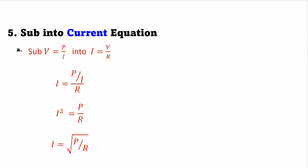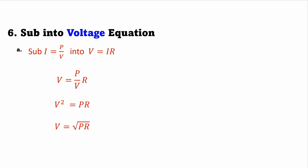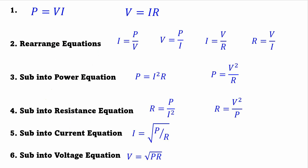I can substitute into the current equation. Putting voltage equals power over current into current equals voltage over resistance gives current equals power over current over resistance. Bringing the current to the left-hand side, I get I squared equals P over R, and taking the square root of both sides gives current equals the square root of power over resistance. For the 12th equation, substituting current equals power over voltage into the voltage form of Ohm's Law gives voltage equals power over voltage times resistance. Bringing voltage to the left gives voltage squared equals power times resistance, and taking the square root gives voltage equals the square root of power times resistance. Starting with one form of Joule's Law and one form of Ohm's Law, I was able to derive all 12 forms.